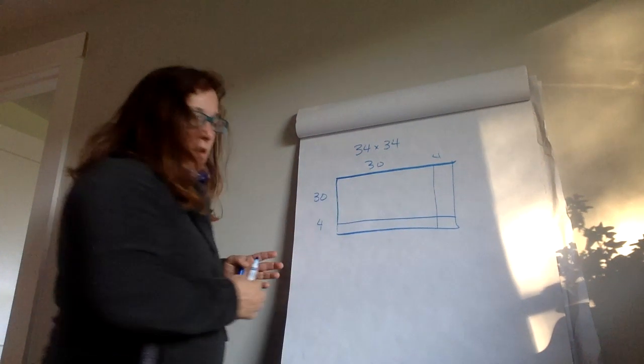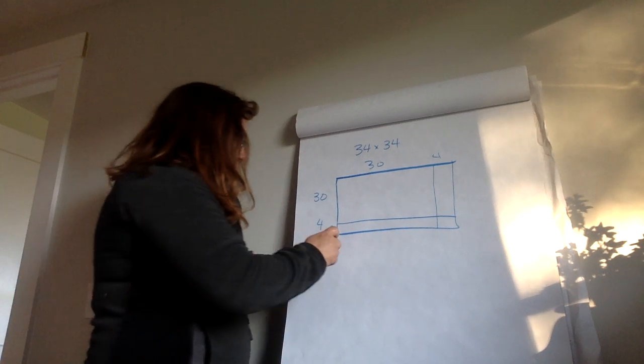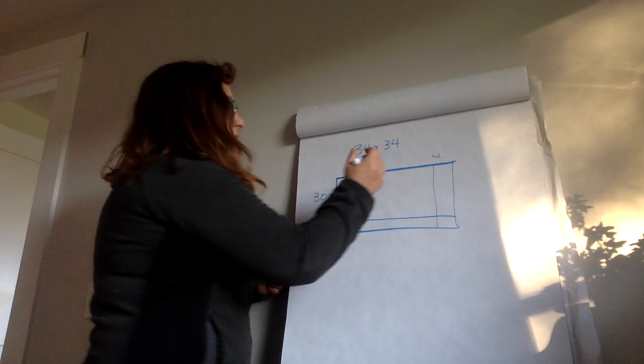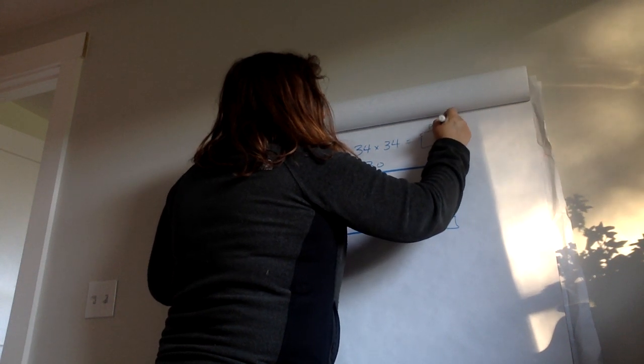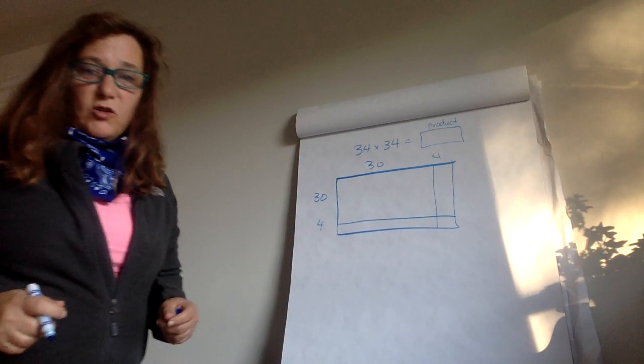So I would multiply parts of the product because I'm going to get my final product right here after I add together the partial products.